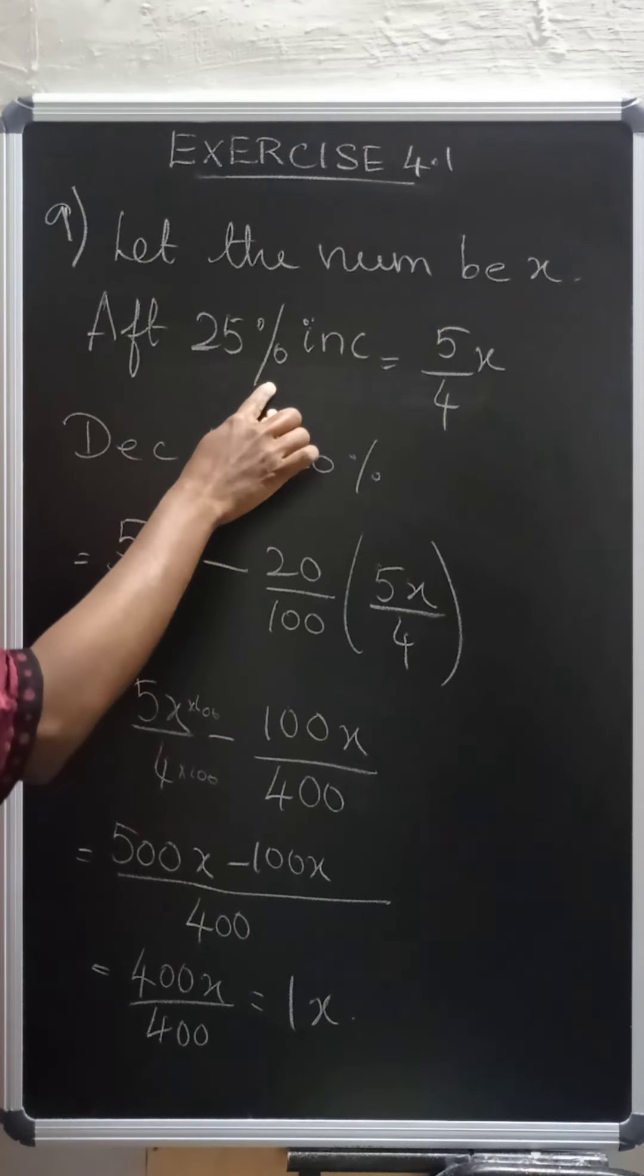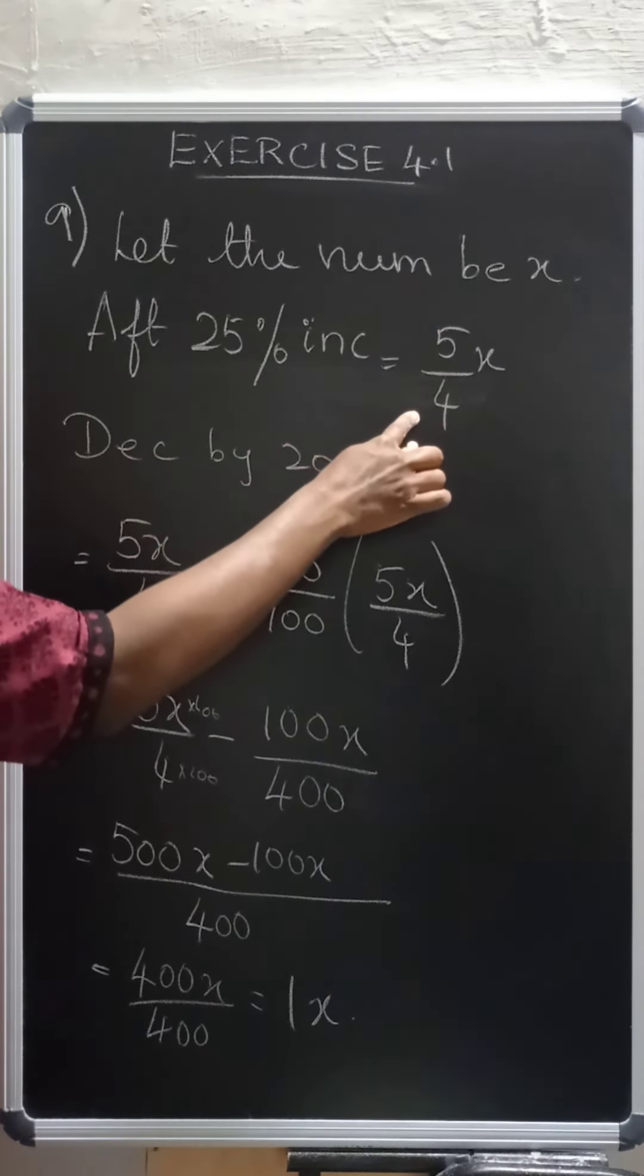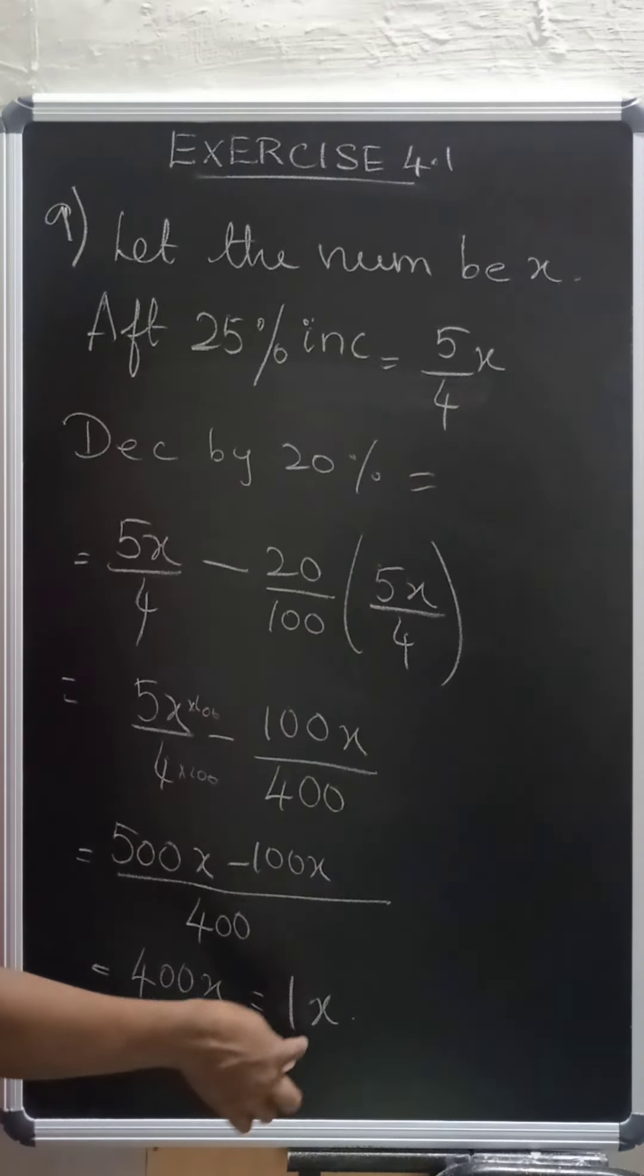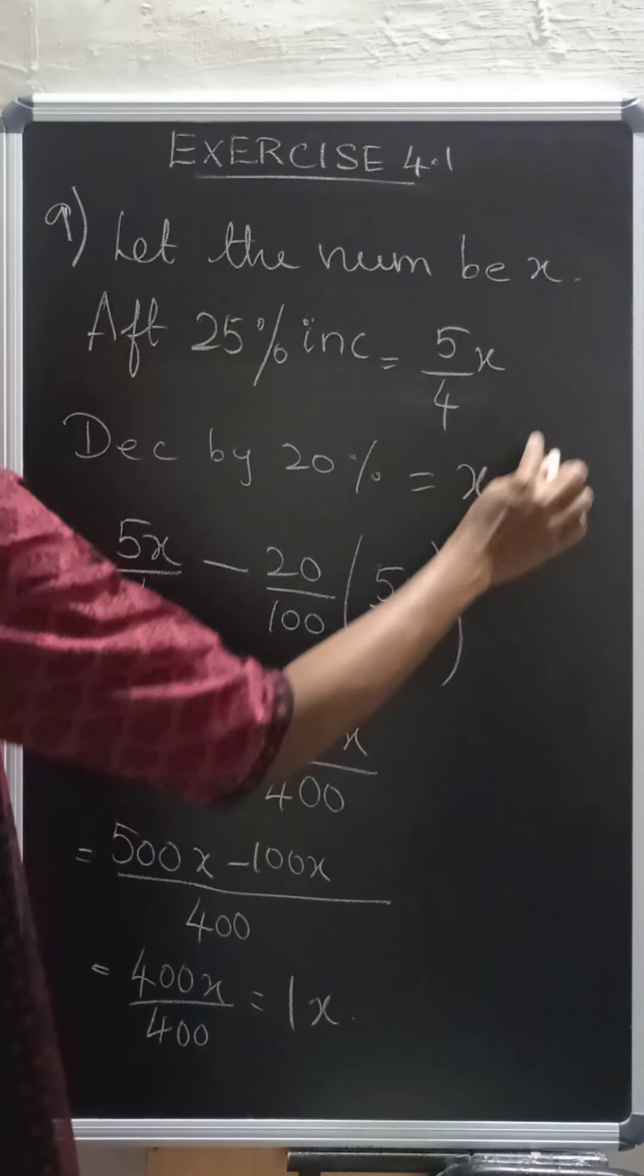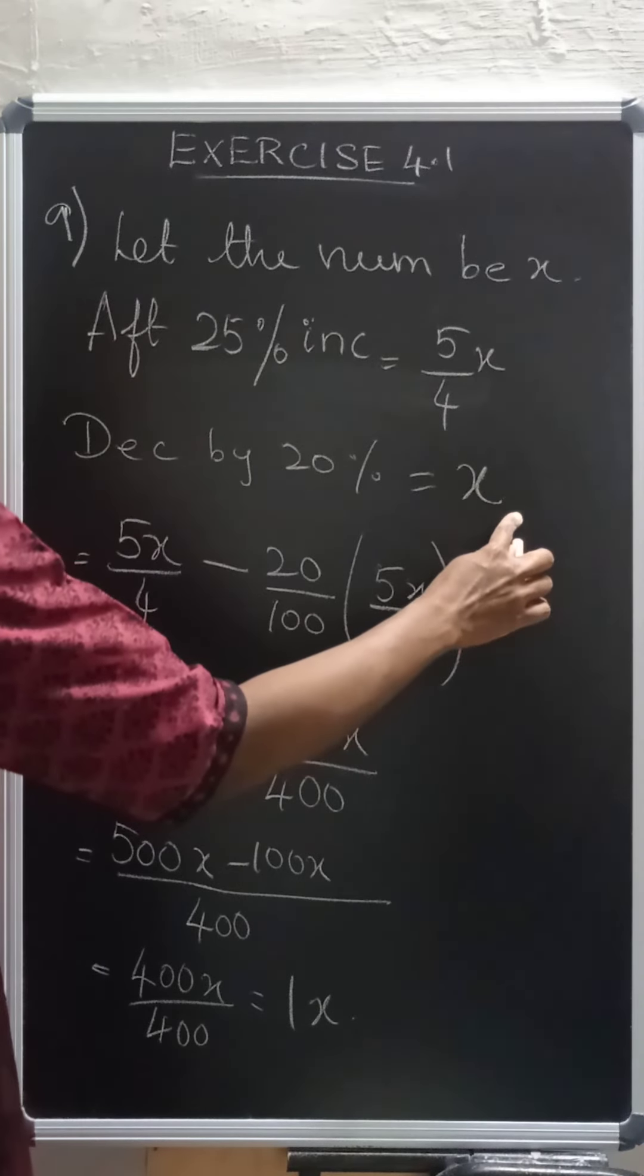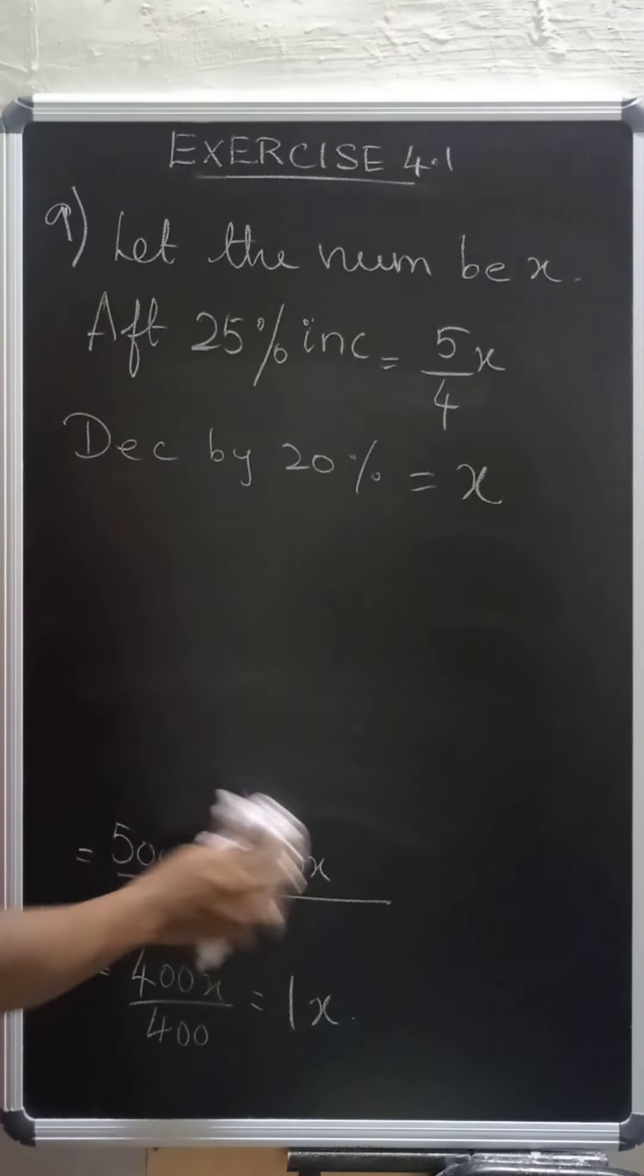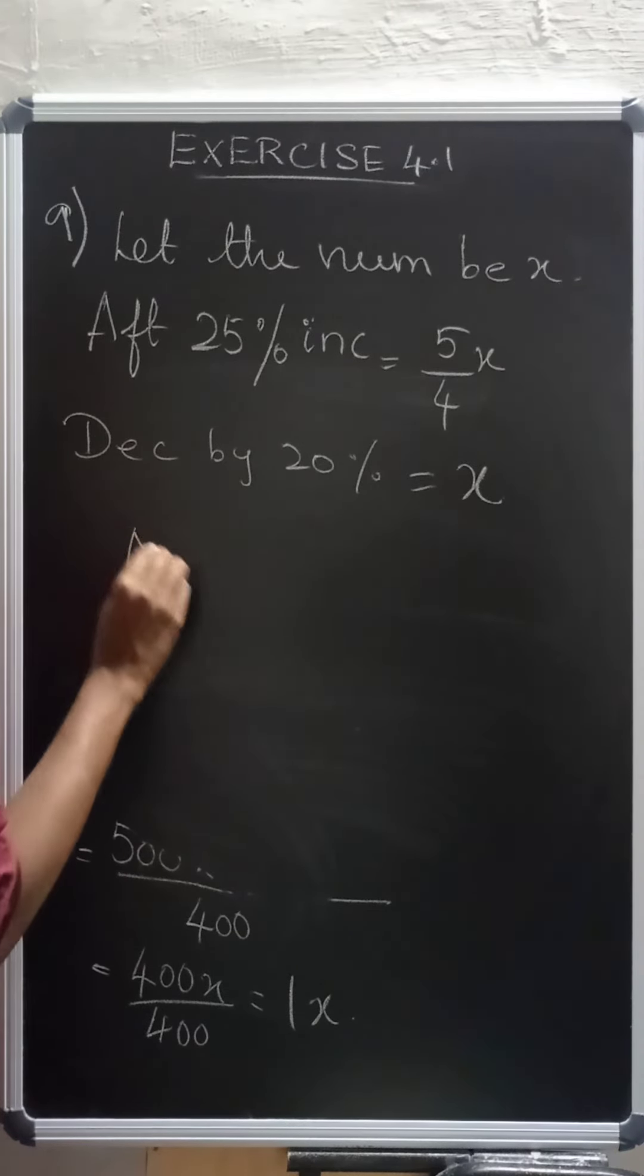So which is equal to 400x by 400 which is equal to 1x. So now the number initially taken is x. After 25% increase, it became 5 by 4x. Then decrease by 20% it became x again. So x is changed into x again. So there is no change. So there is no change in the number.